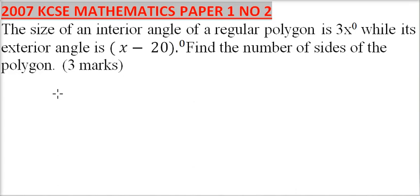So we know that the exterior angle and the interior angle of a regular polygon add up to 180. Therefore, 3x plus x minus 20 degrees is equal to 180 degrees.